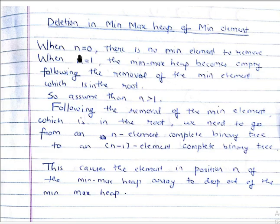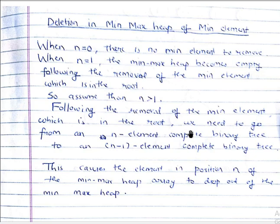Now, n is the number of levels. So when the number of levels is zero, there is no min element to remove. When the number of levels is equal to one, the min-max heap becomes empty following the removal of the min element, which is in the root. So we assume n is greater than one. Following the removal of the min element at the root, we go from an n-element complete binary tree to an n-minus-one element complete binary tree. This causes the element at position n of the min-max heap array to drop out of the min-max heap.